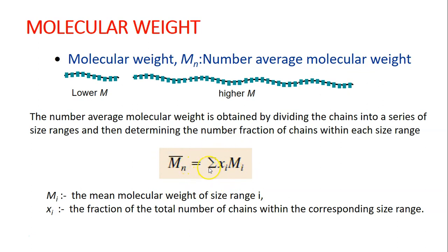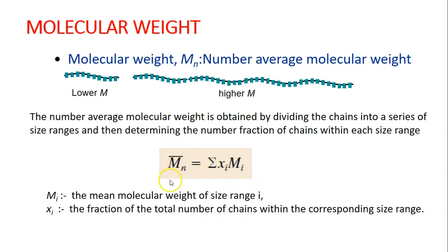The number average molecular weight can be calculated using the formula: Mn equals the summation of xi times mi. Here, xi is the fraction of the total number of chains within the corresponding size range, and mi is the mean molecular weight of size range i. For each size range, you multiply the number fraction by the mean molecular weight, and then sum up all those multiplications.